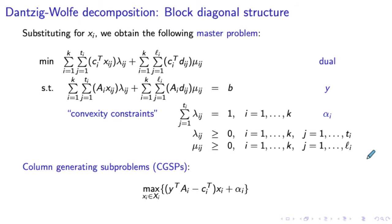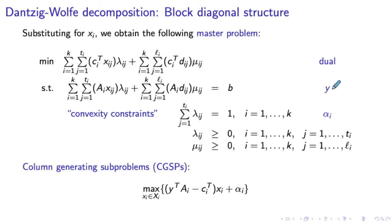As before, to proceed with the iterations of Dantzig-Wolf decomposition, we identify some columns to include in the restricted master problem to begin with and solve it to optimality. We denote by Y the optimal values of the dual variables corresponding to the complicating constraints, and by αi the optimal value of the dual variable corresponding to the i-th convexity constraint. Recall that we have a convexity constraint for each block, so we have a total of k convexity constraints and k dual variables αi's. Y and αi's represent the optimal values for the dual variables for the current restricted master problem.